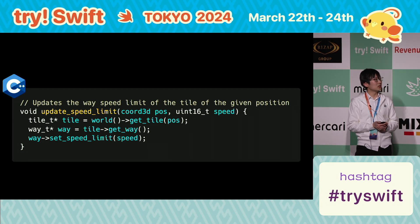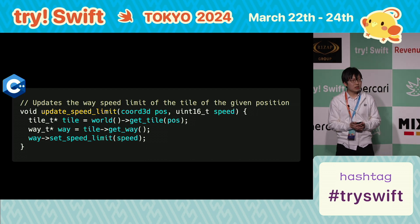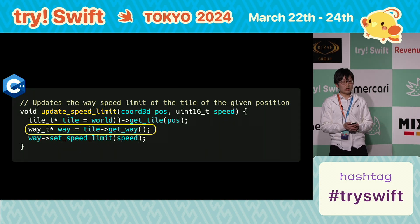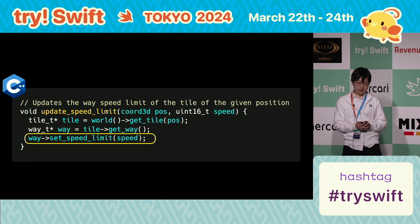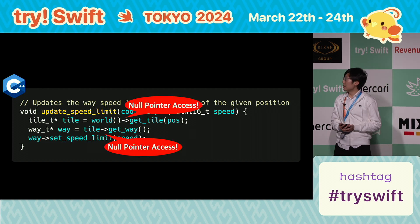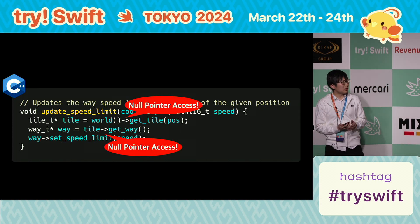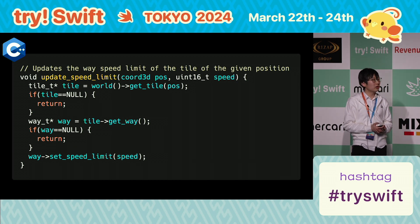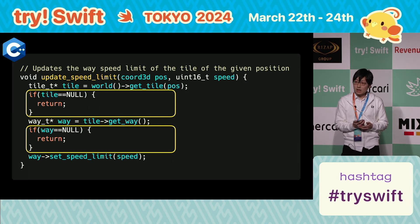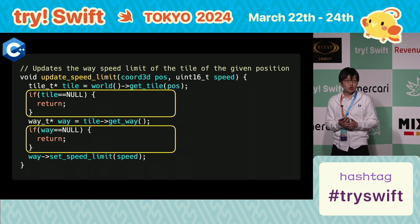Here's what's happening in SimTrans: everything is passed by pointers. In this example, the way object is fetched via the tile pointer, and the set speed limit function is used via the way pointer. As you may notice, these pointers can potentially be null, and if these pointers are null, accessing them will cause a crash. To prevent a crash, we have to do the null pointer check like this. This is needed every time we handle null pointers, and we have to write them by hand. Forgetting them will lead to a null pointer access crash.